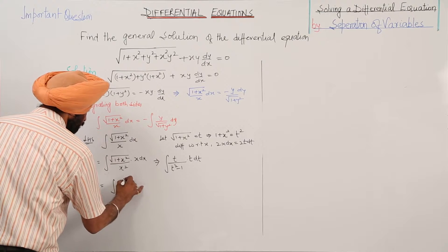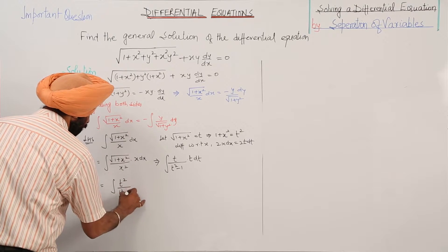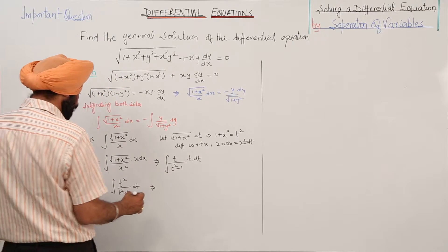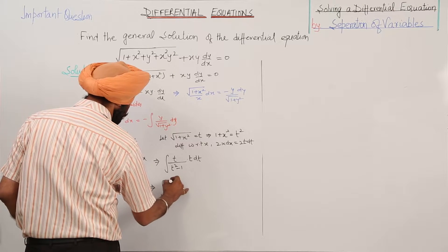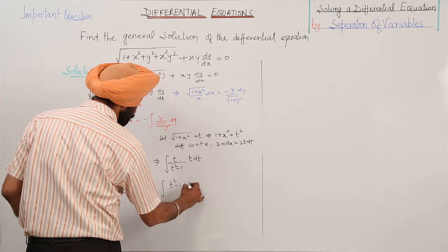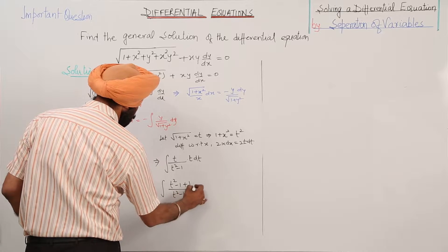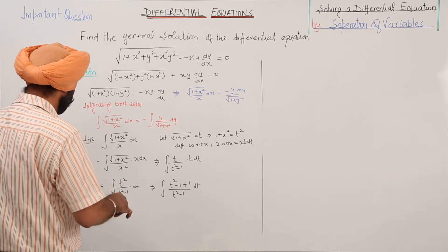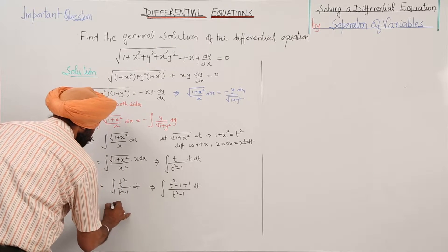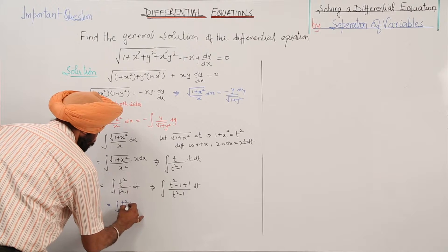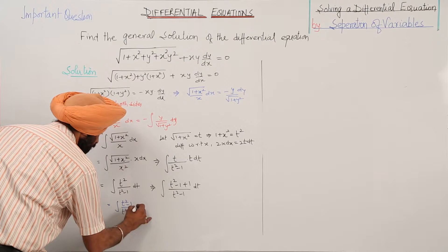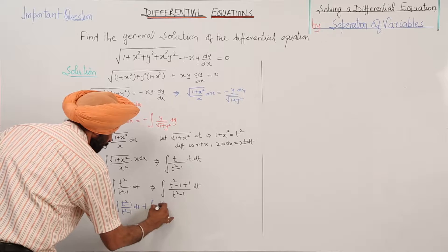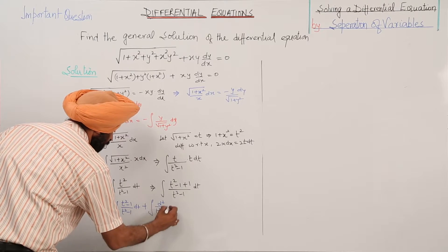This becomes integration of t square upon t square minus 1 dt. We can write t square as t square minus 1 plus 1 upon t square minus 1 dt. Splitting: integration of t square minus 1 upon t square minus 1 dt plus integration of dt upon t square minus 1.